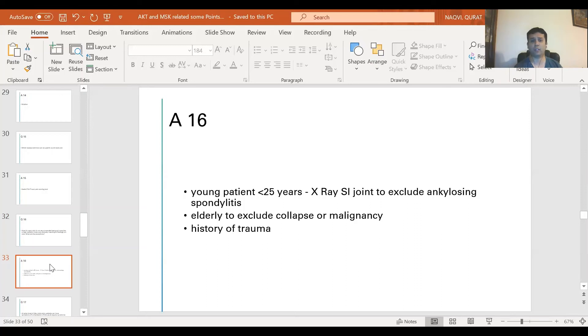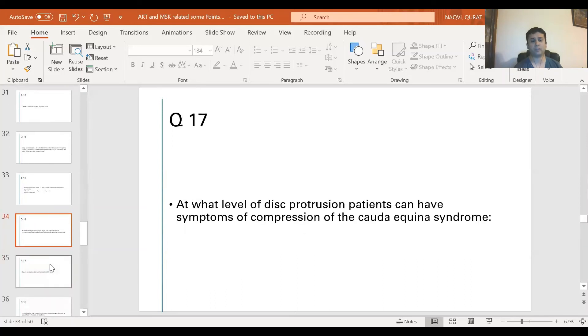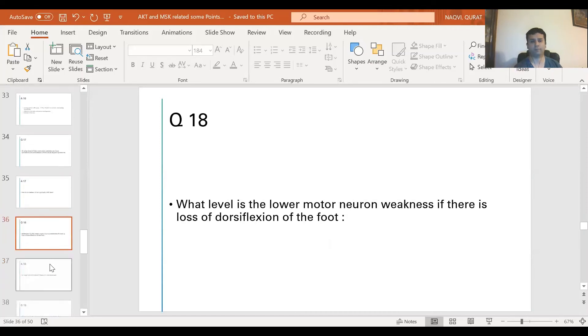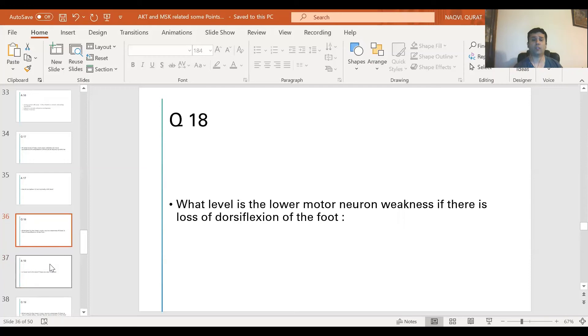Question 17: At what level of disc protrusion can patients have symptoms of compression or cauda equina syndrome? It has to be below L2 because that's where spinal cord ends, but typically it happens at L4-L5 level. Question 18: What level is the lower motor neuron weakness if there is loss of dorsiflexion of the foot? The answer is L4 level, but L4-L5 level if toes are also involved.